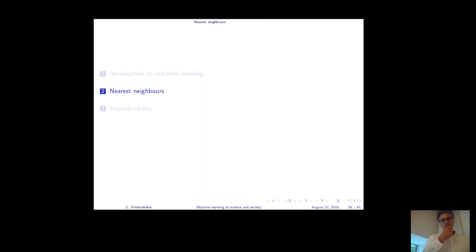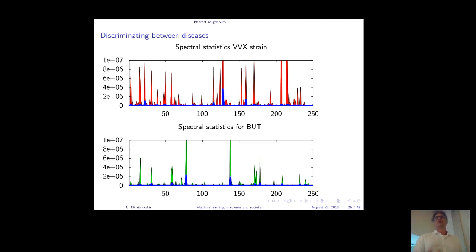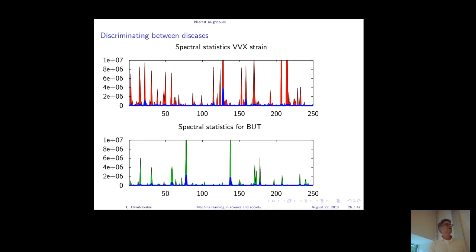Let's start talking about nearest neighbors. Say you have two bacteria — I'm just a data analyst, so I see data and need to discriminate between those two types of bacteria. In this case you have spectral data from a mass spectrometer — you throw the bacteria in, blast with radiation, and get some output that tells you something about the chemical composition of every bacterium.